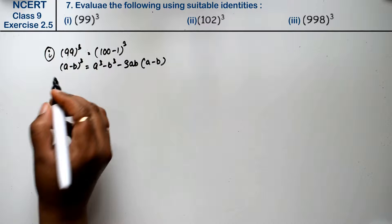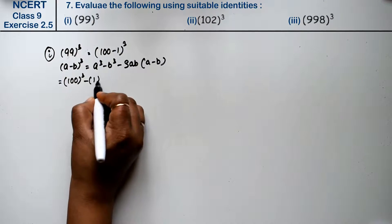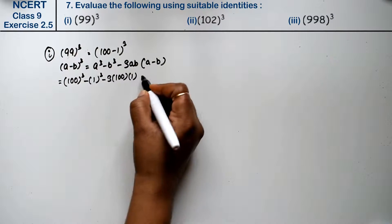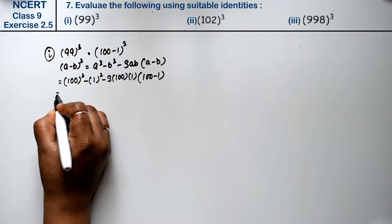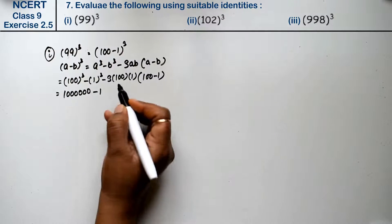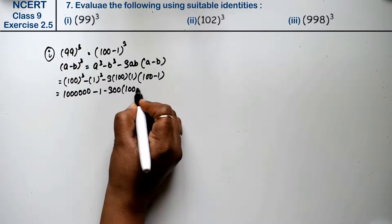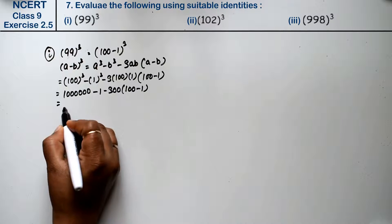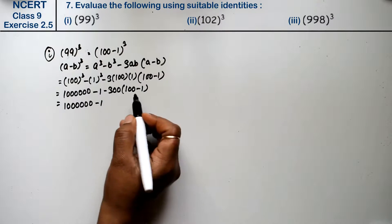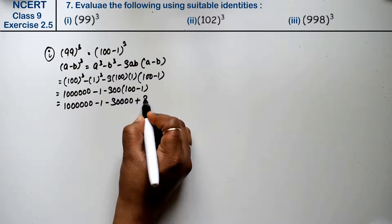So in place of A we write 100 and in place of B we write 1. So: 100 cube minus 1 cube minus 3 into 100 into 1 times (100 minus 1). 100 cube gives us 1,000,000 (six zeros). Minus 1, minus 300 times (100 minus 1). That gives us minus 30,000 plus 300.